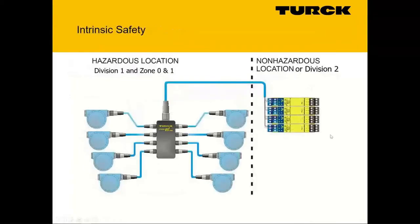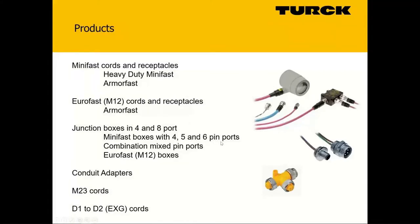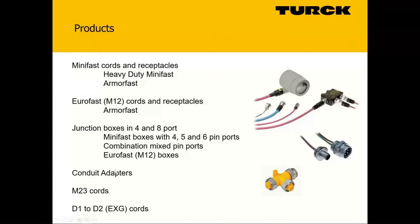It's plug and play — devices, receptacles, back to junction boxes, back to our barriers. Most of my time is oil and gas, spent outdoors, but we do pharmaceutical, chemical, food and beverage across the board. We have our Mini Fast cords — the larger cord sets — Euro Fast M12s, junction boxes, conduit adapters, M23 cords, some Div 1 to Div 2 options. We also have a stocking program for the process industry, really driven by oil and gas — we need product available all the time.